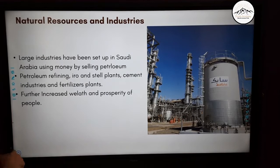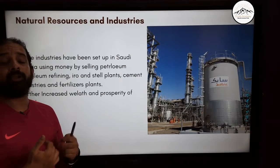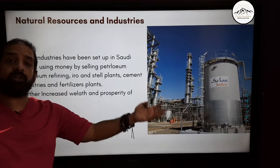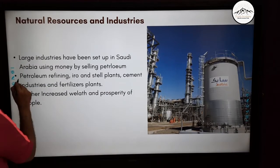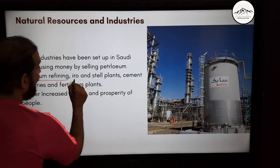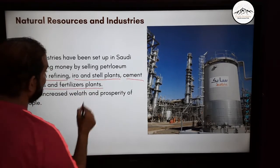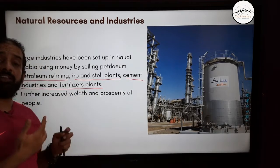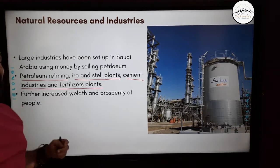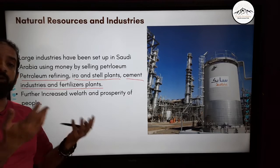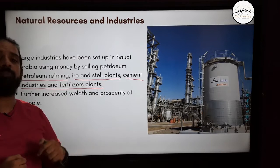Let's look at the natural resources. Saudi Arabia has lots of petrol and petroleum products which they sell to other countries. Using that money, they have invested in petroleum refineries, iron and steel products, cement industries, and fertilizer plants, which have further increased the wealth and prosperity of people there.